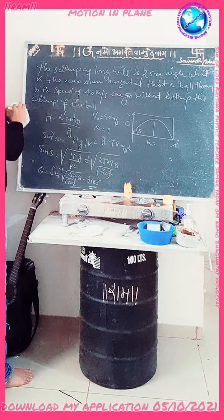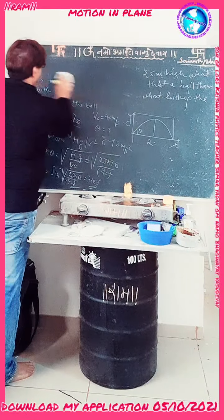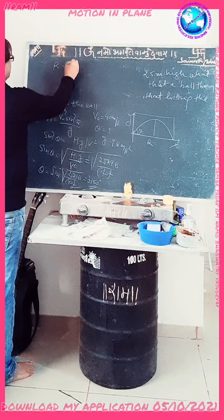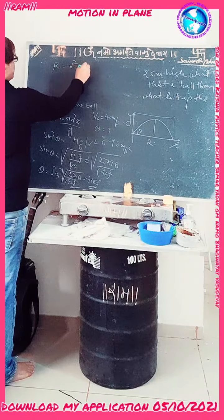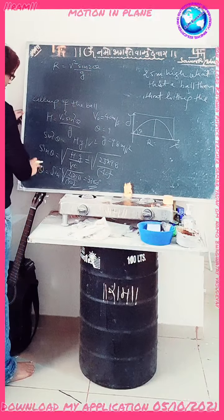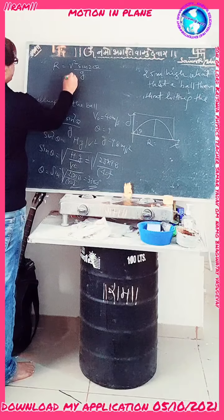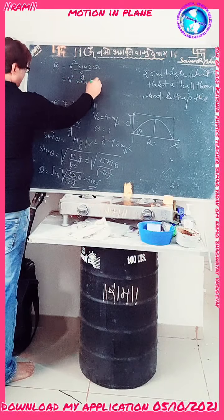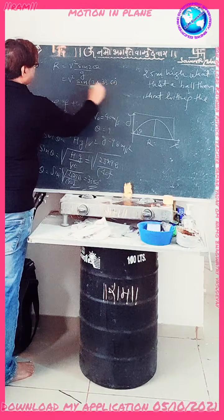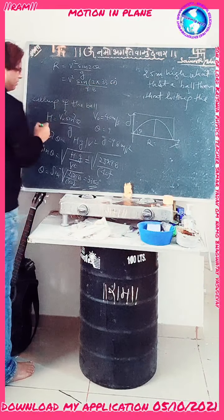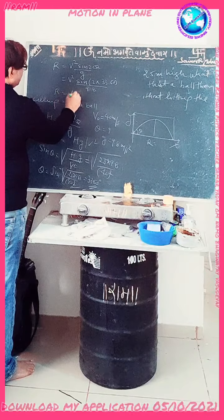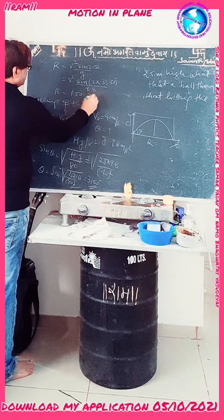Now we will find the horizontal distance using the range formula. Range R is equal to V² sin(2θ) divided by g. Substituting the values: V² into sin(2 × 33.6°) divided by g, which is 9.8. Solving this, we get R equal to 150.22 meters.